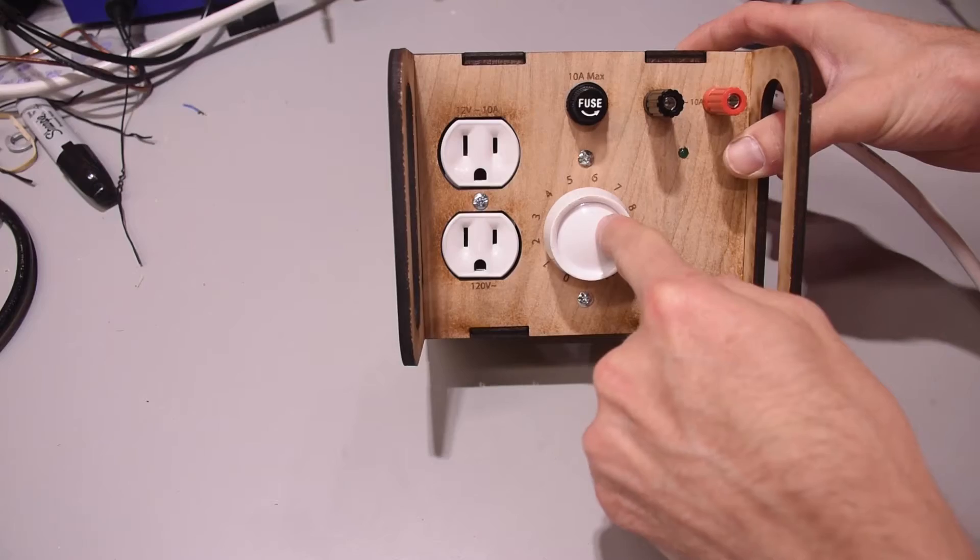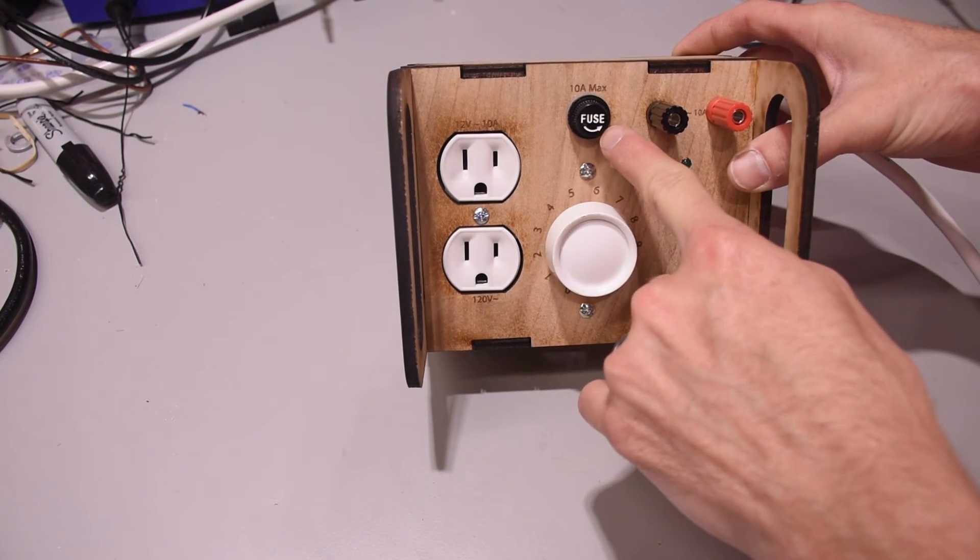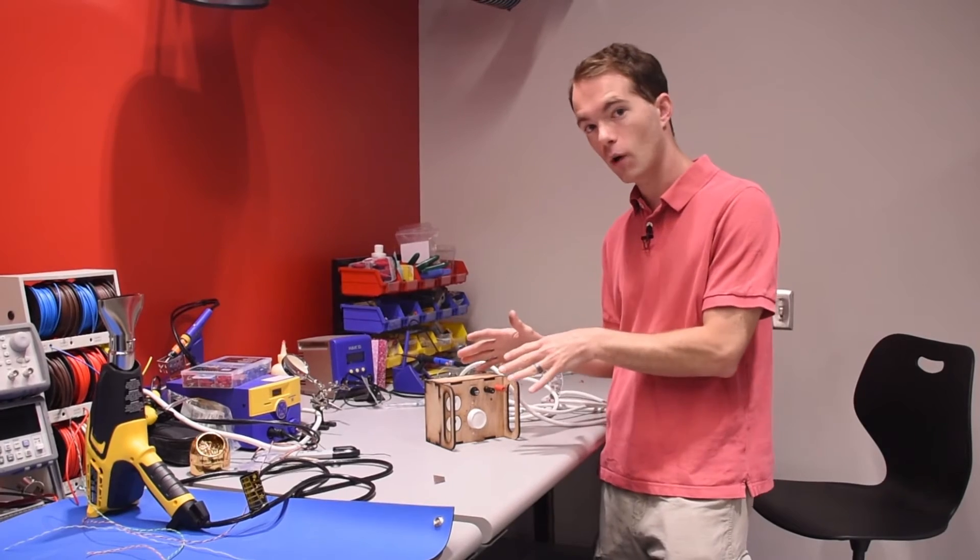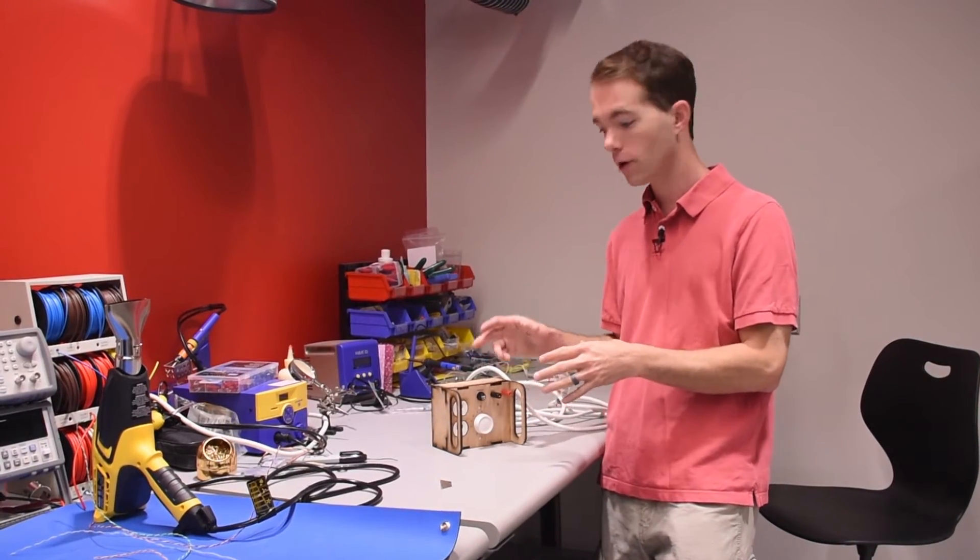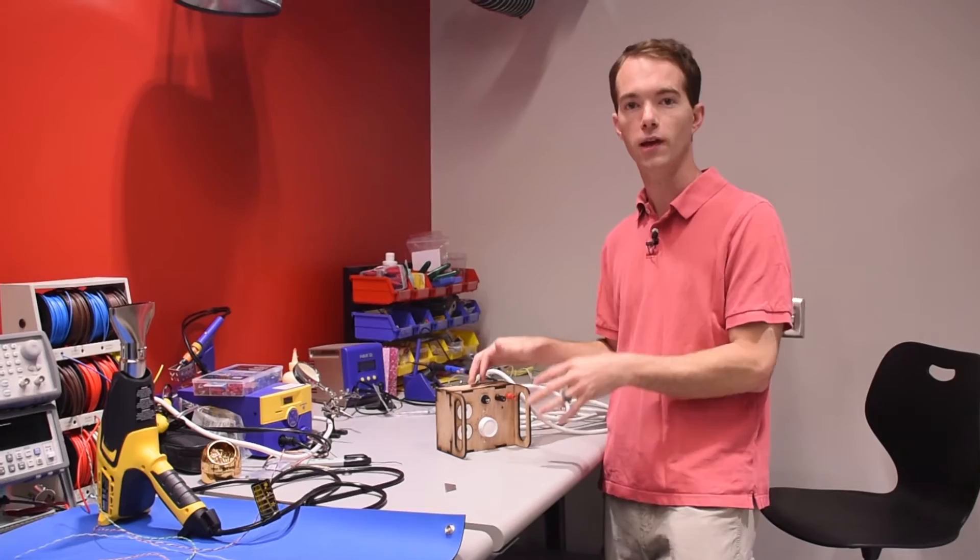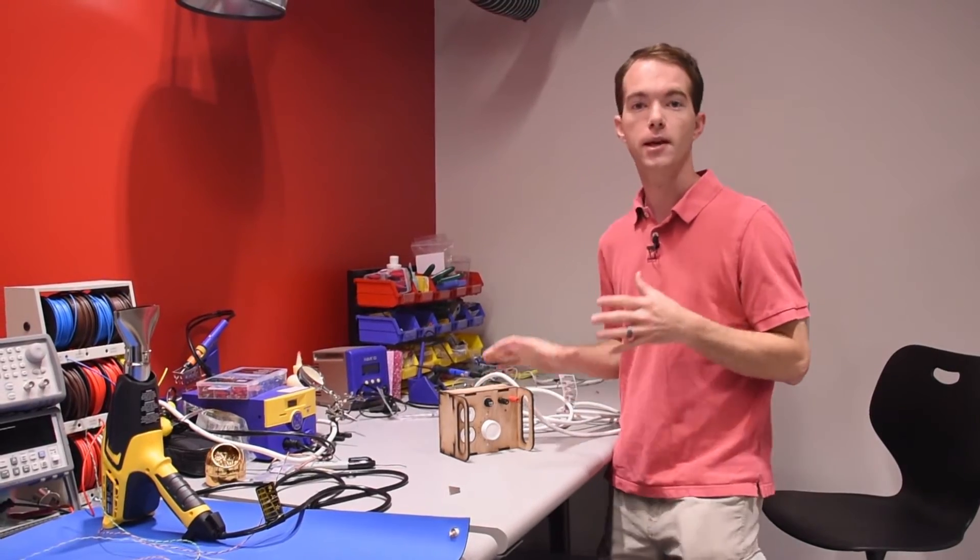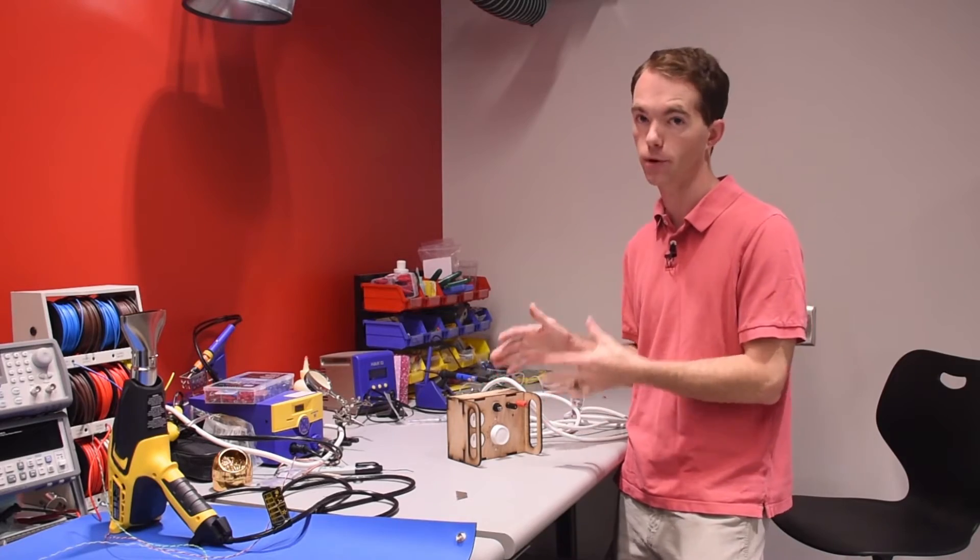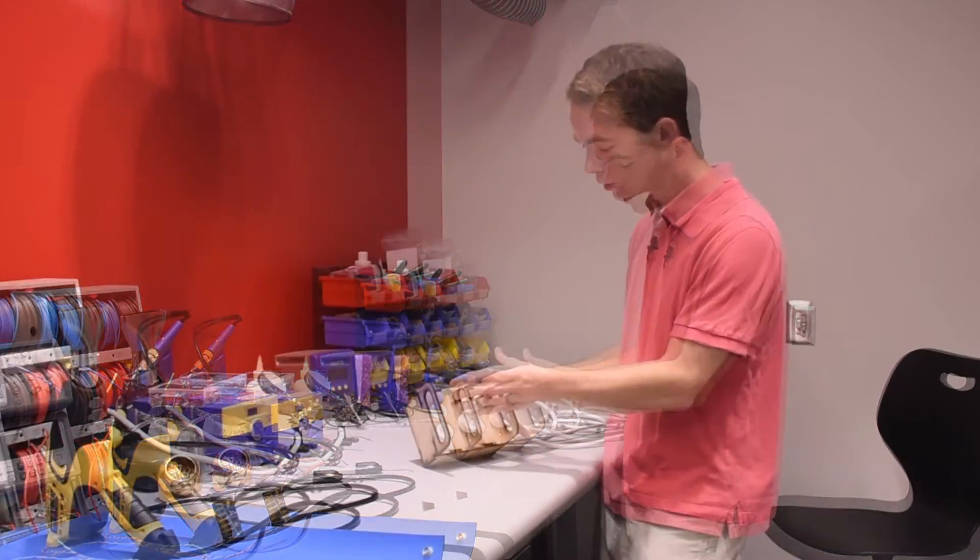So come out of the dimmer switch into the transformer, I come out directly to my 10 amp fuse. Now 150 watts gives me 12 and a half amps on the secondary side, however I'm not going to put a 12 and a half amp fuse in. I'm only putting a 10 amp fuse in because I want to make sure that I don't blow my transformer, because the fuse is a heck of a lot cheaper than a transformer.